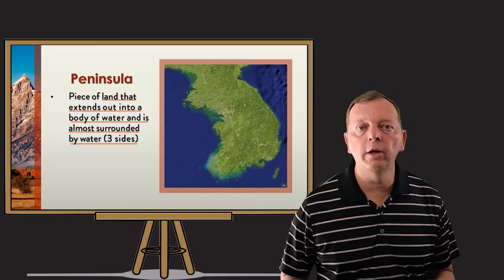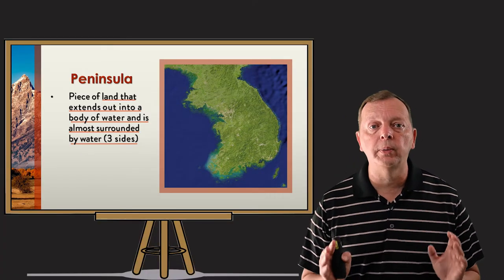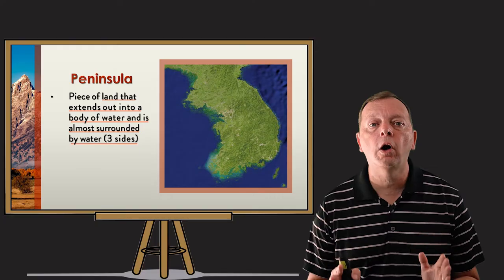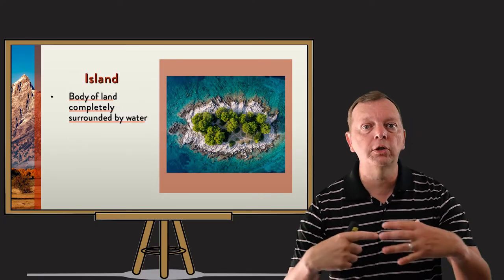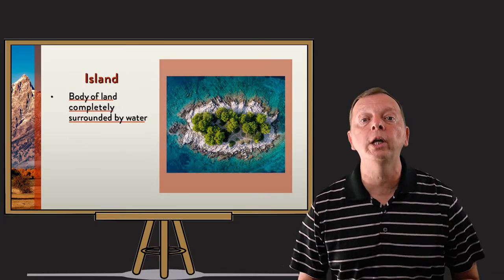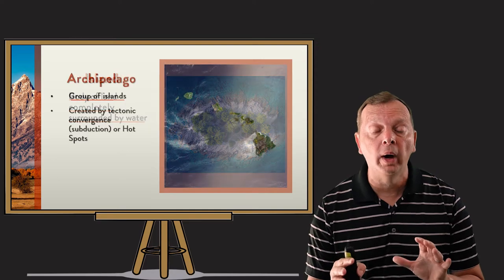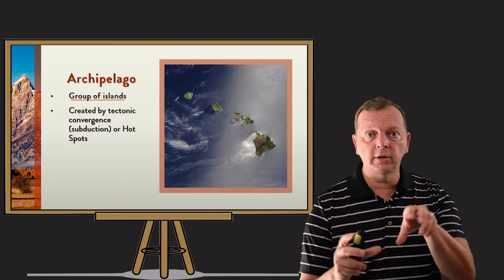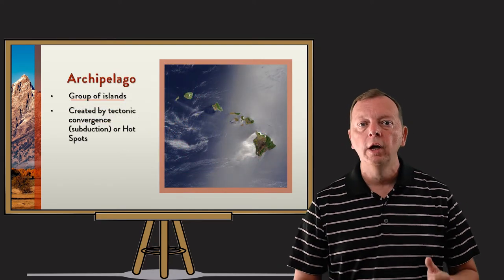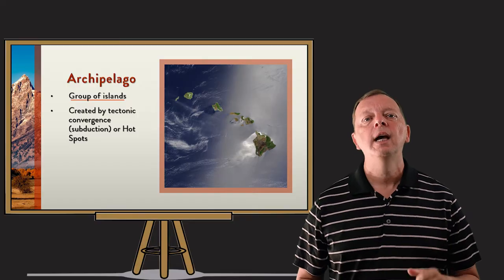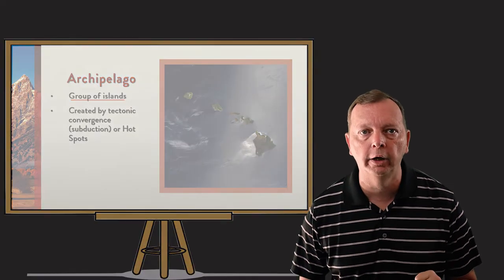When a piece of land juts out into the water and is surrounded on three sides, we call this a peninsula. And if the water completely surrounds the land, we call this an island. And if you take lots of different islands and put them together, such as the Hawaiian Islands or the Philippines, this is what we call an archipelago.